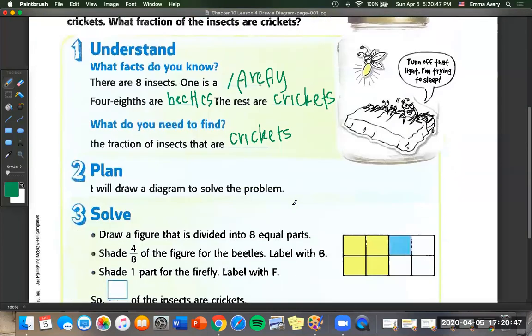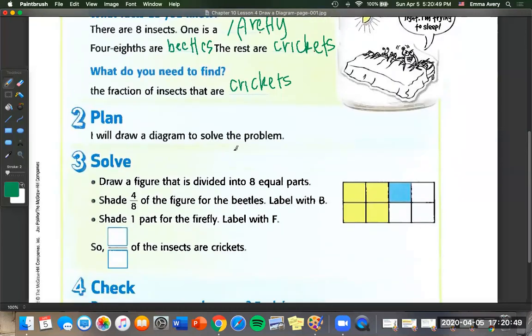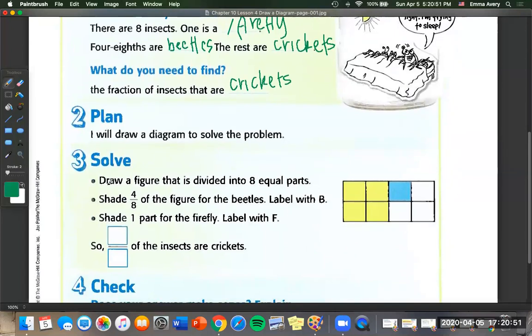Let's go down to our plan. So I will draw a diagram to solve the problem. So it shows us to draw a figure that is divided into eight equal parts. Shade four eighths of the figures for the beetles. So that's what this yellow is over here is for the beetles.